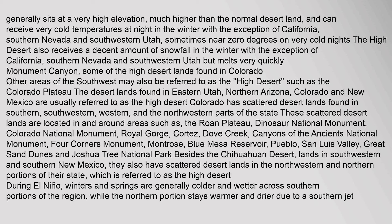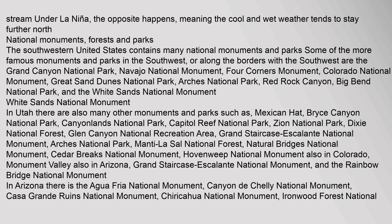Other areas of the southwest may also be referred to as the high desert, such as the Colorado Plateau. The desert lands found in eastern Utah, northern Arizona, Colorado, and New Mexico are usually referred to as the high desert. Colorado has scattered desert lands found in the southern, southwestern, western, and northwestern parts of the state, located in and around areas such as the Rhone Plateau, Dinosaur National Monument, Colorado National Monument, Royal Gorge, Cortez, Dove Creek, Canyons of the Ancients National Monument, Four Corners Monument, Montrose, Blue Mesa Reservoir, Pueblo, San Luis Valley, Great Sand Dunes, and Joshua Tree National Park. Besides the Chihuahuan Desert lands in southwestern and southern New Mexico, they also have scattered desert lands in the northwestern and northern portions of their state, referred to as the high desert. During El Niño, winters and springs are generally colder and wetter across southern portions of the region, while the northern portion stays warmer and drier. Under La Niña, the opposite happens, meaning the cool and wet weather tends to stay further north.